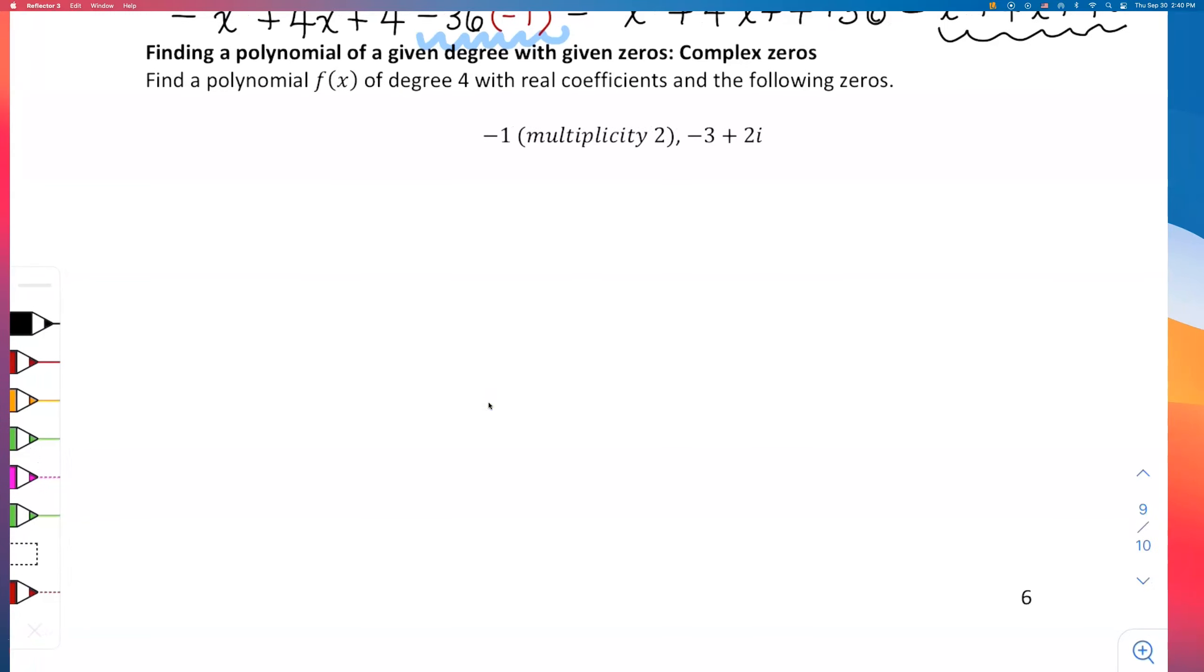To find a polynomial of a given degree with given zeros, we've got a couple of zeros listed. We're going to have to do a lot of multiplying, so this video will be a little bit heavier on algebra. But it's alright, we can do it. So it says find a polynomial f(x) of degree 4.